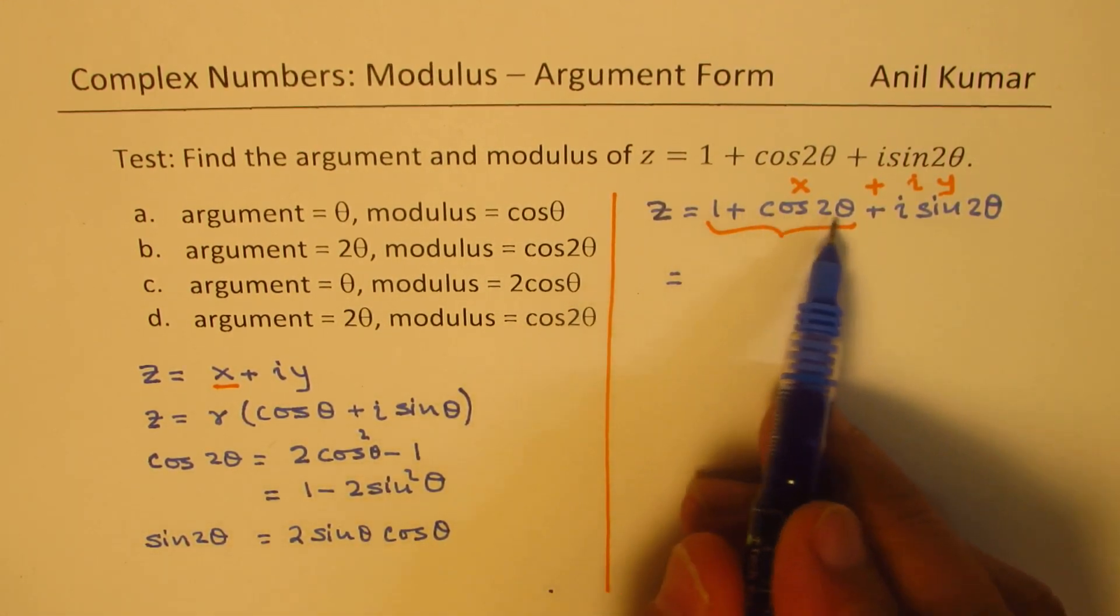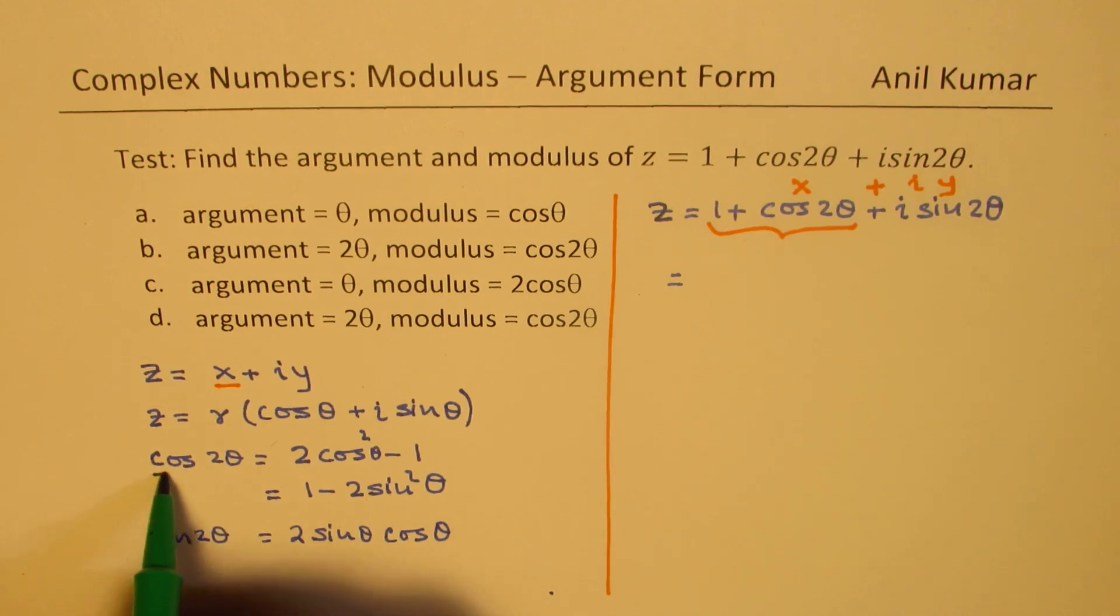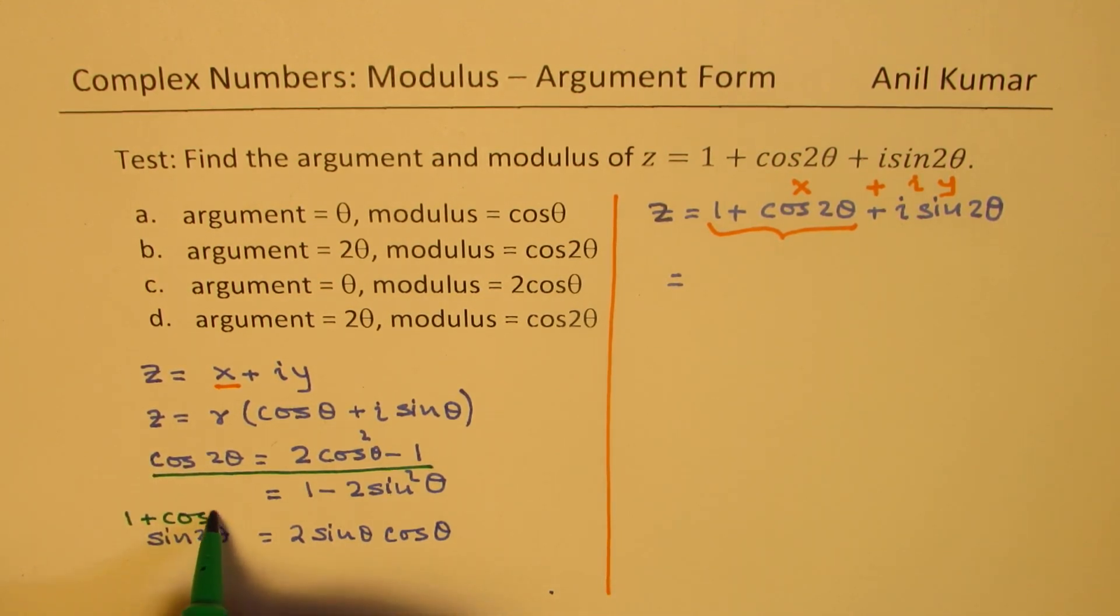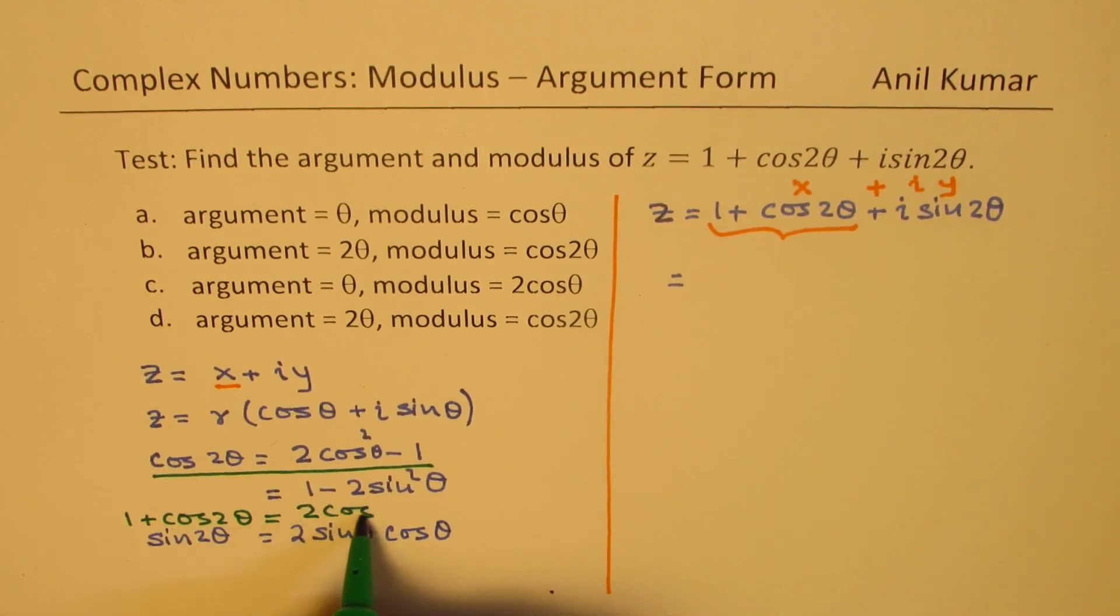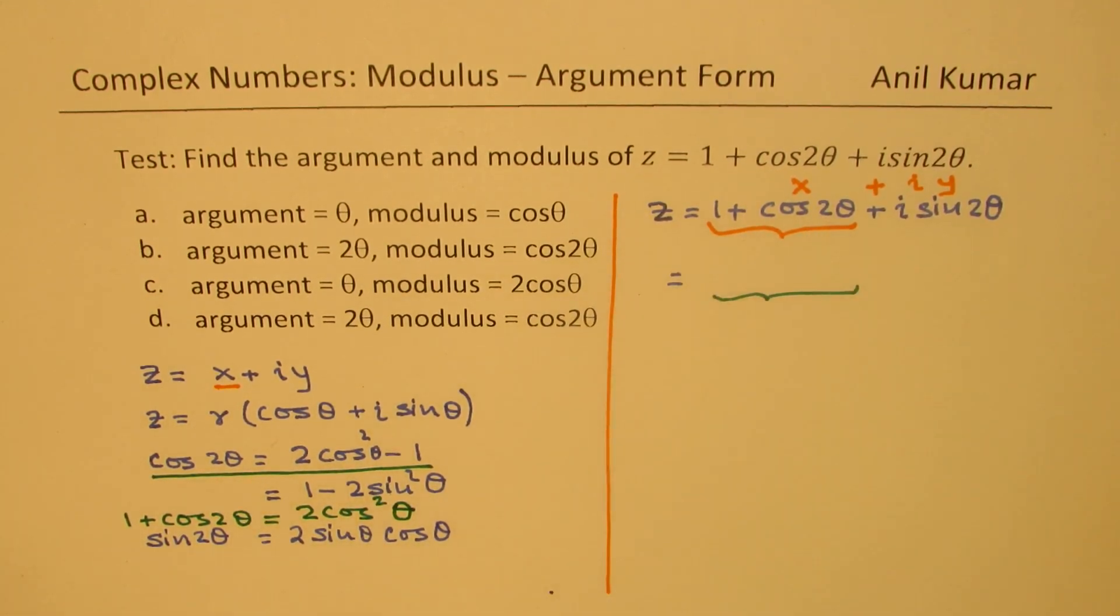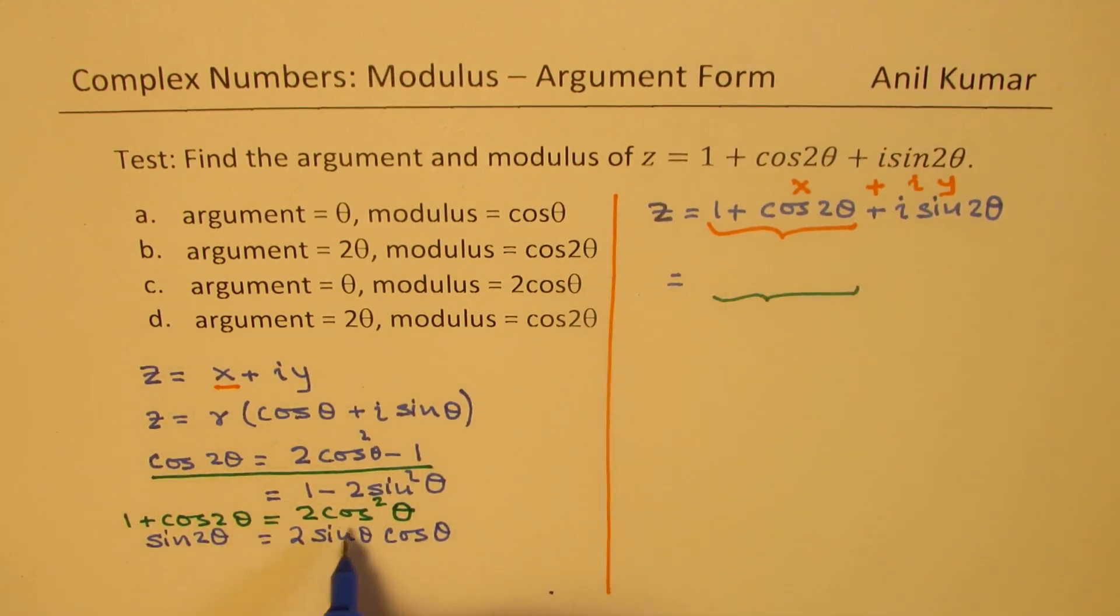1 plus cos 2 theta from this particular formula, if you rearrange, what can you get? Bringing 1 to this place, you get 1 plus cos 2 theta equals to 2 cos square theta. We are going to make this substitution here for the term, which is the real part. So we will rearrange after this.